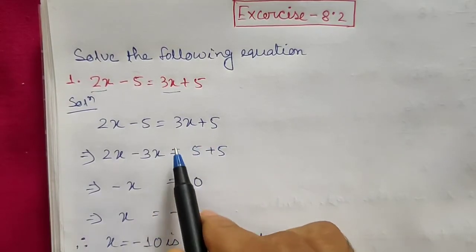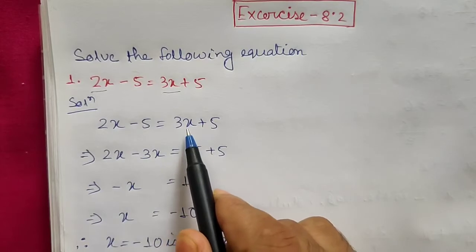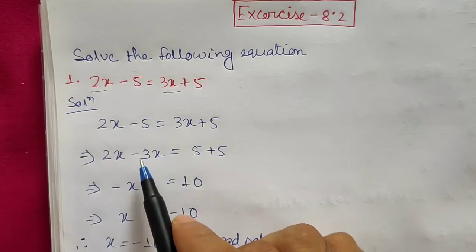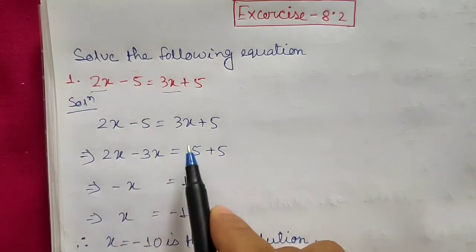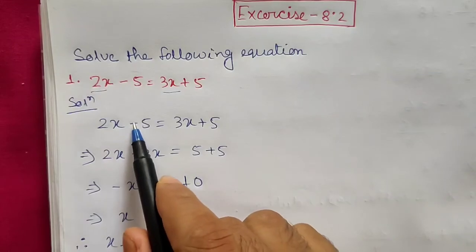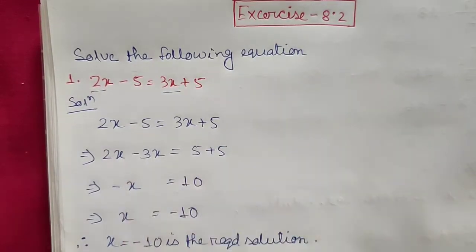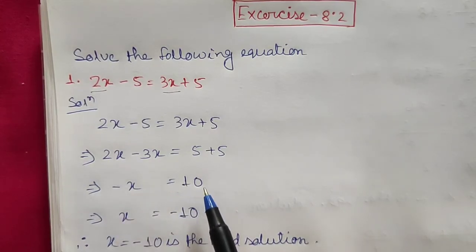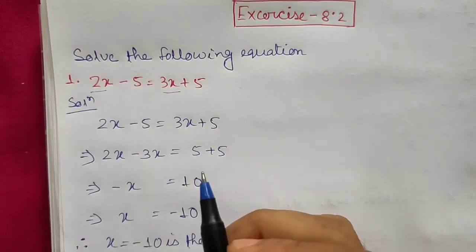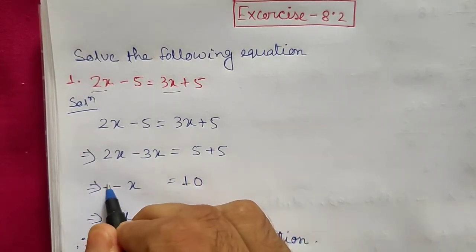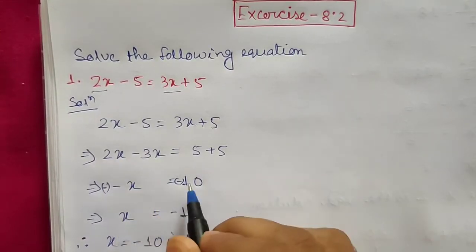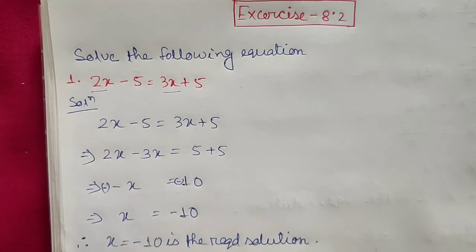Question 1 of Exercise 8.2: 2x minus 5 equals 3x plus 5. By transposing, we bring 3x to the left hand side; since it was plus, it becomes minus, giving 2x minus 3x equals 5. Transposing minus 5 gives plus 5, so minus x equals 10. Multiplying both sides by minus 1, x equals minus 10. Hence x equals minus 10 is the required solution.